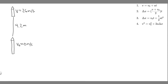In this problem, we're told a model rocket rises with constant acceleration to a height of 4.2 meters, at which point its speed is 26 meters per second. A: how much time does it take for the rocket to reach this height? B: what is the magnitude of the rocket's acceleration? And C: find the height and speed of the rocket 0.10 seconds after launch.